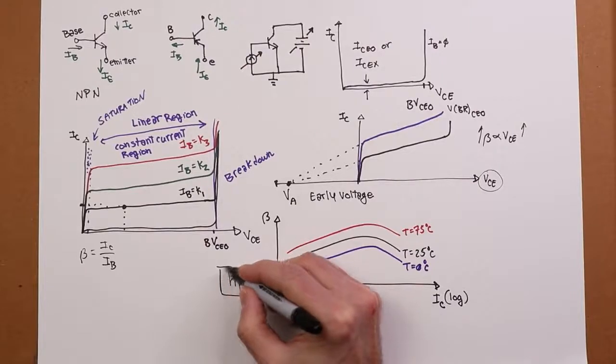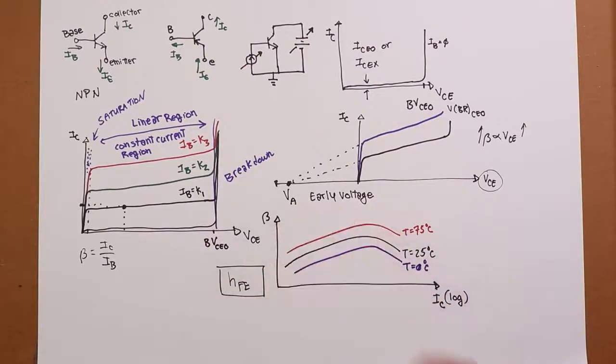Look for either beta or HFE on a datasheet. Capital FE, by the way, refers to the DC value because there is a little bit of a variation for AC. In any case, so we see variations with voltage, we see variations in beta with temperature, we see variations with current. And of course, there's variations from transistor to transistor to transistor.